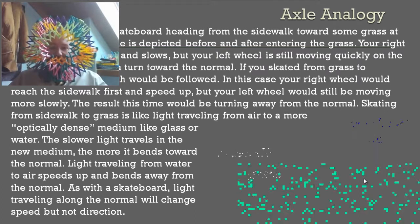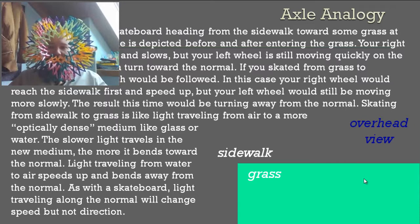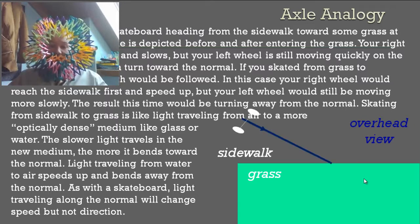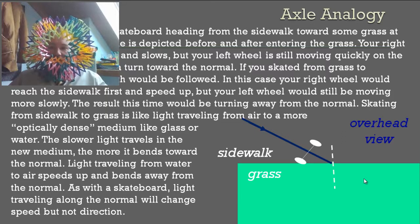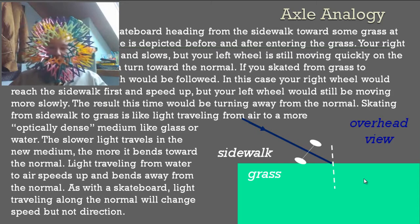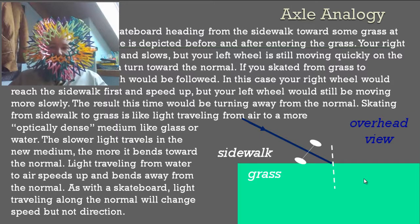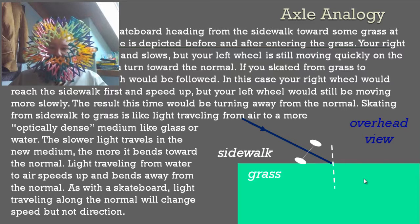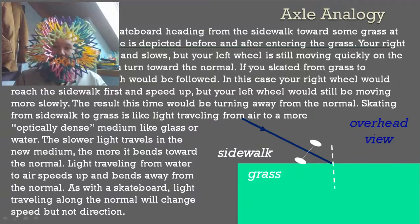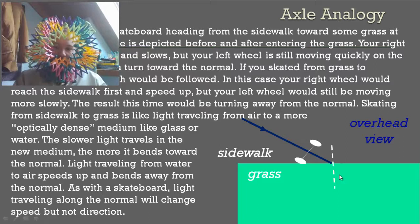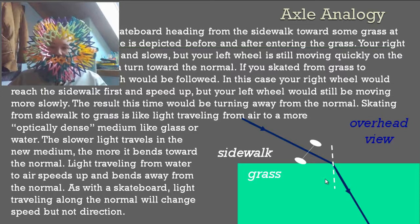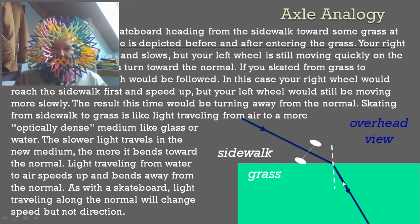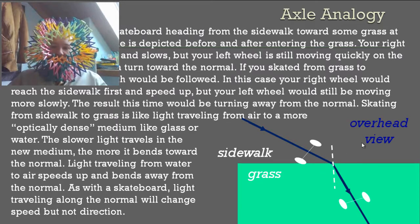So here's a little graphic to show you what this very long wordy paragraph just said. Here's your sidewalk, here's your grass, we're looking at it from the top. You take your skateboard and you move along, and your right wheel is going to hit the grass. Here's a normal line. As your right wheel hits the grass, it's going to start moving more slowly, but your left wheel is still moving fast. So you start to turn towards the normal line, bending in this way towards the normal. Here's your original path, and here's your new path through the grass.